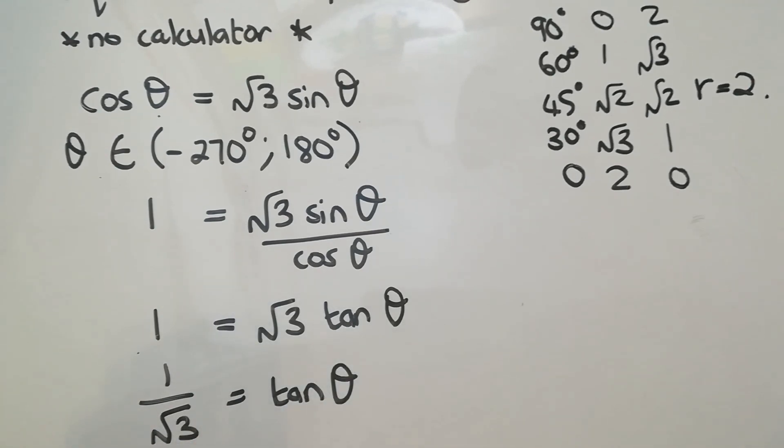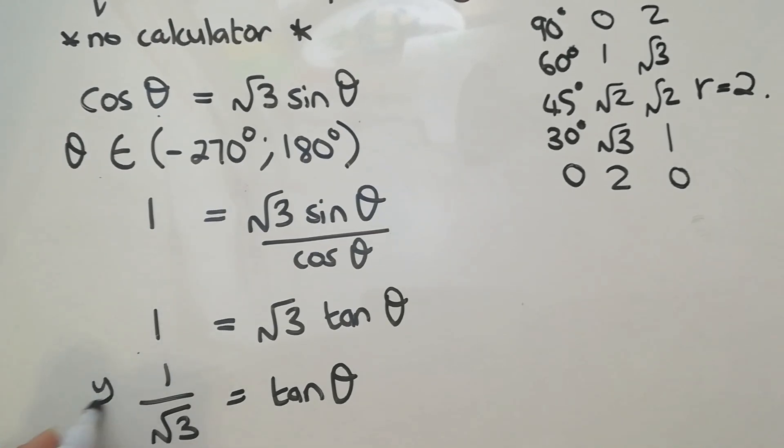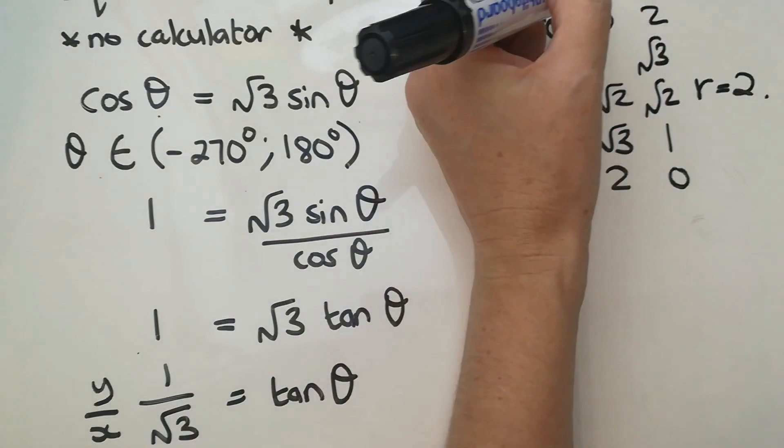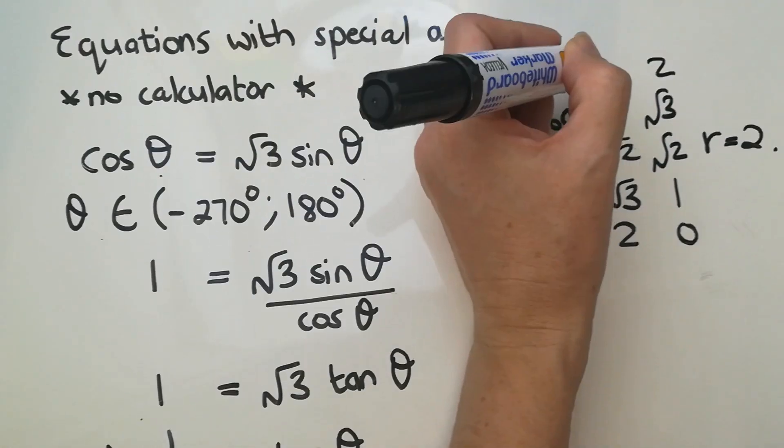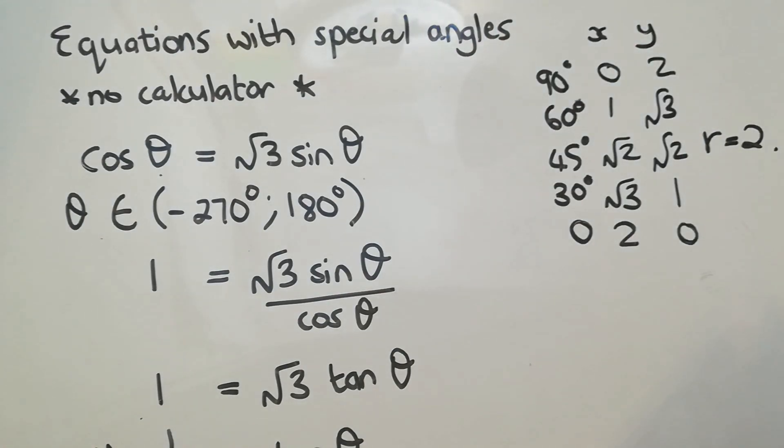And that's when I go to my special angle diagram. And I say, well, what is the degree where tan gives me 1 over root 3? And then obviously we need to remember that tan is the y over x. So for what degree in my special angle diagram is the y 1 and the x root 3? Perhaps I should have added here that this is x and that is y. So the y needs to be 1 and the x needs to be root 3. So it's this one.